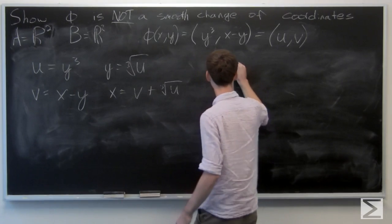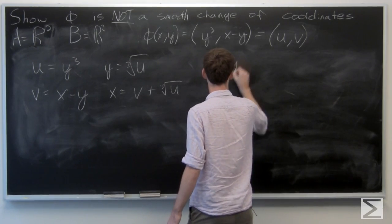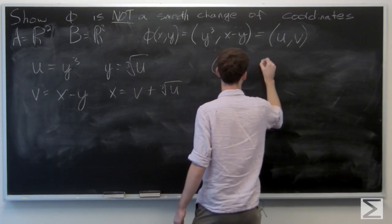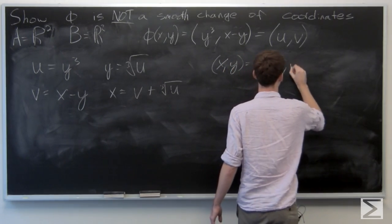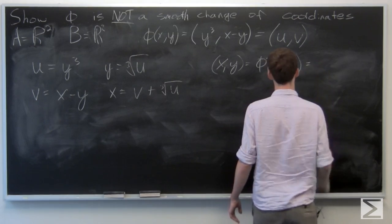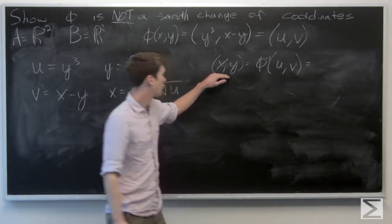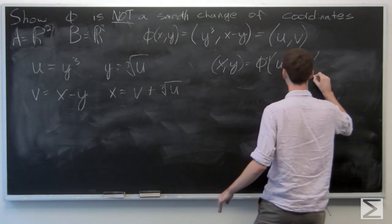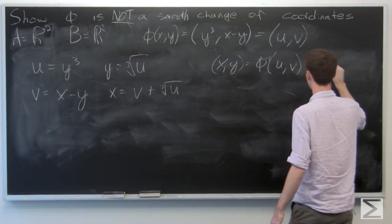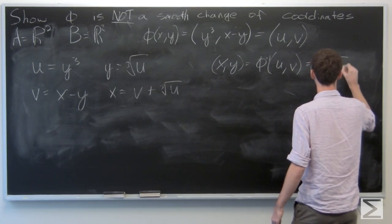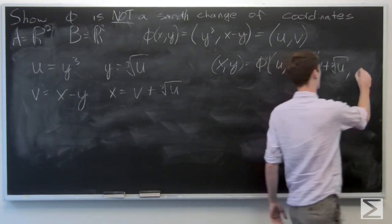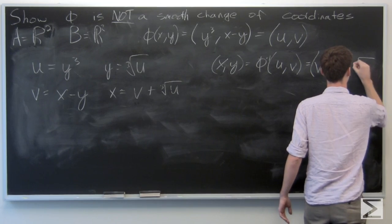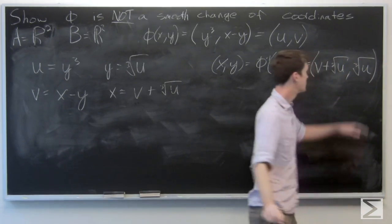So our inverse function has x component v plus the cube root of u, and y component the cube root of u.